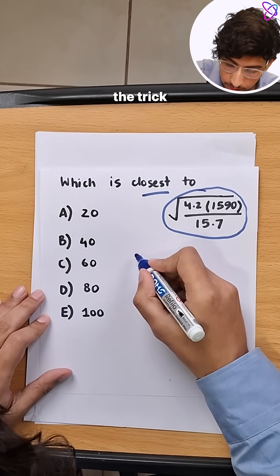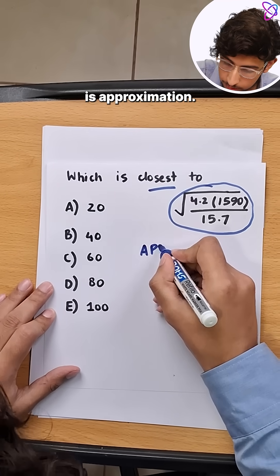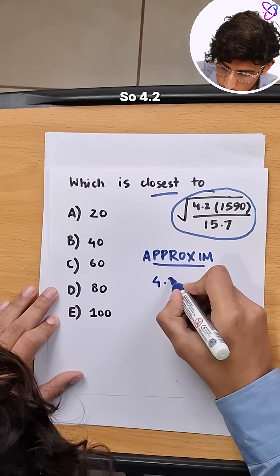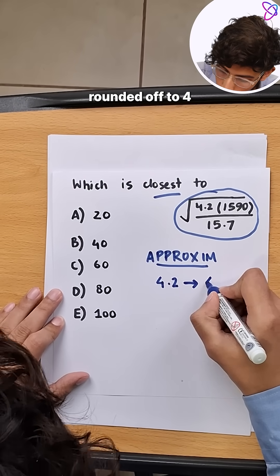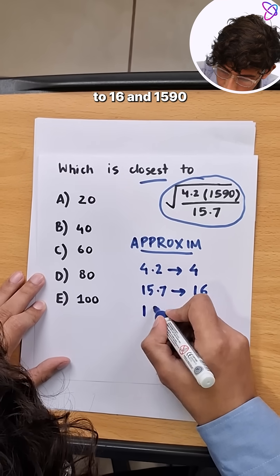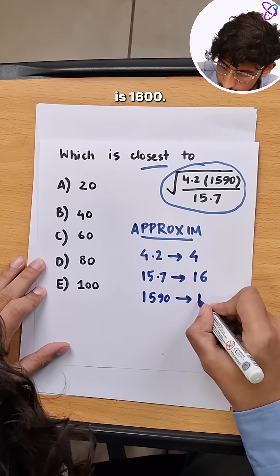So what we can do is the trick is approximation. So 4.2 can be rounded off to 4, 15.7 can be rounded off to 16, and 1590, the closest is 1600.